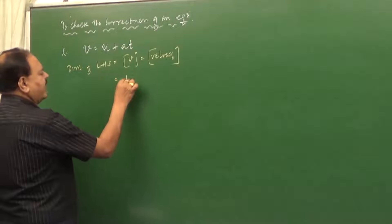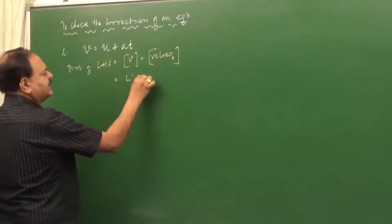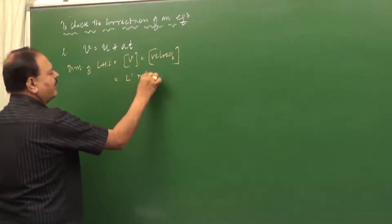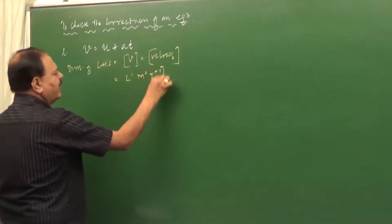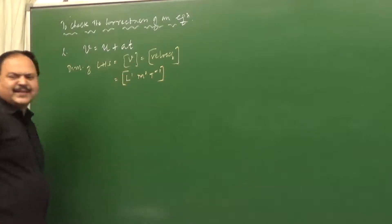What is the dimension of velocity? Velocity has 1 in length, 0 in mass, and minus 1 in time. So the dimension of velocity is L¹M⁰T⁻¹.